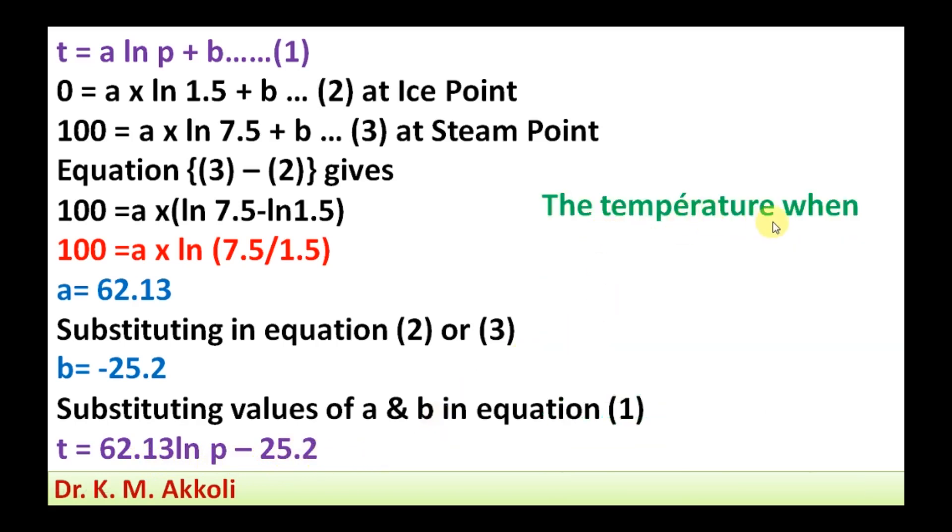Then the temperature when p equal to 3.5, if you substitute p equal to 3.5 in this equation, we are going to get the temperature at that value of the thermometric property. That is t equal to 62.13 ln 3.5 minus 25.2, that means t equal to 52.63 degree Celsius.